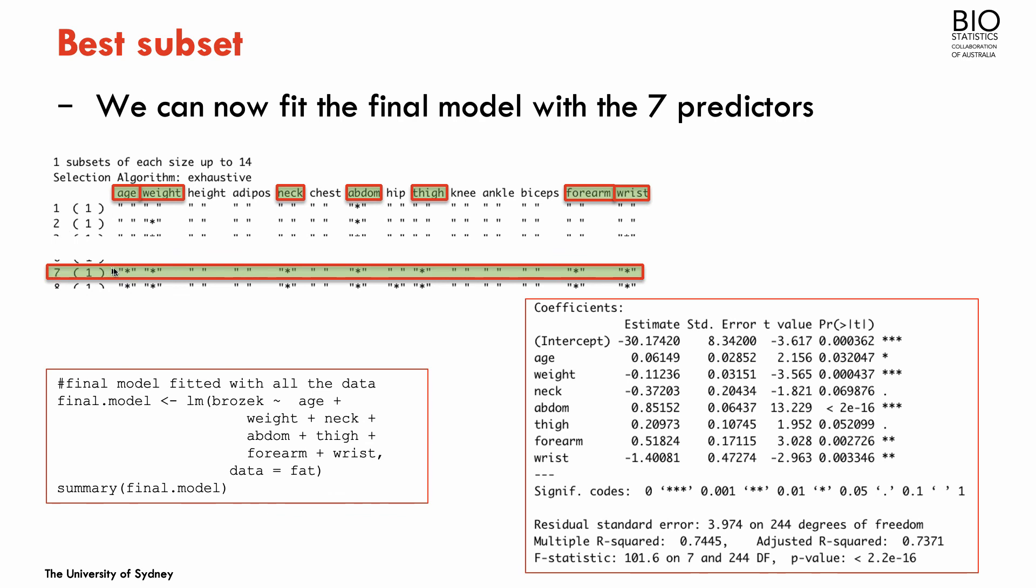So I could go now back to the matrix of the best models and look at the best models with seven predictors. And this will be the model that includes age, weight, neck, abdomen, thigh, forearm, and wrist variables. And I could now fit the final model using these seven variables. And you have the output, the usual output for linear regression.